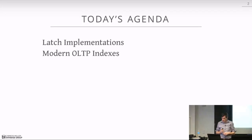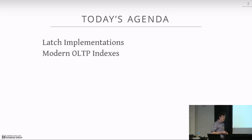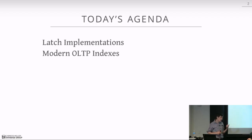For today's class, we're going to talk about OLTP indexes relevant to project two. We'll spend time at the beginning talking about how to actually implement a latch, since most of you may have taken an OS or systems course and may only be familiar with using mutexes. Then we'll switch into modern OLTP indexes: the BW tree, which is latch-free, concurrent skip lists, and the Radix tree from Hyper, which is not latch-free as far as I know.